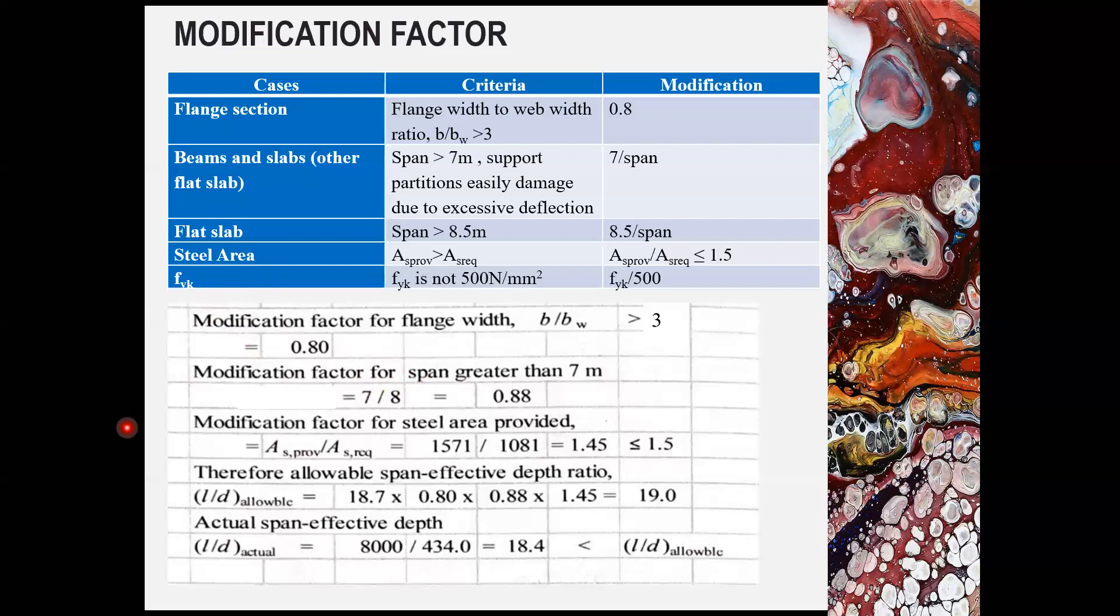So l over d allowable will be equal to l over d basic multiplied with the modification factor number 1 due to flange width, multiply modification factor number 2 due to span, multiply modification factor due to steel area provided. And you obtain the allowable span effective debt ratio, which in this case is 19.